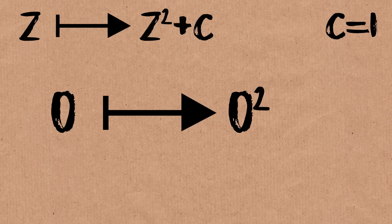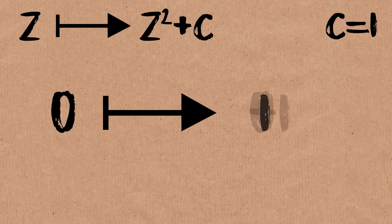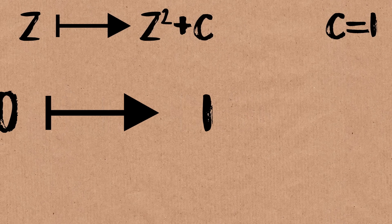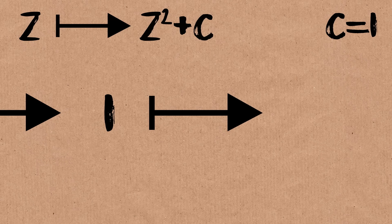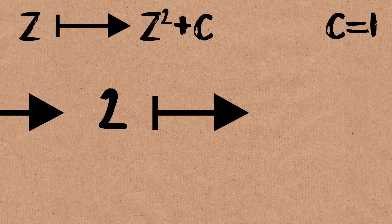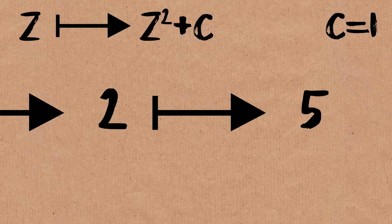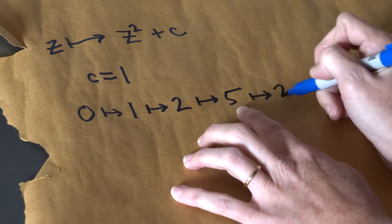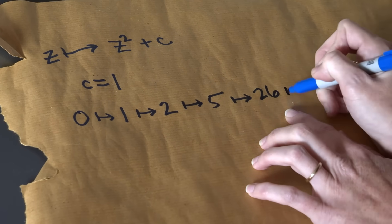So 0 maps to 0 squared, which is 0, plus 1, so that's the first iteration. Now I take 1 and I put it right back into the formula, so I square it and I add the value, which is 1, so 1 plus 1, that's 2. I take 2, I square it and I add 1, that's 5. I take 5, I square it, I add 1, that's what, 26, and so on.